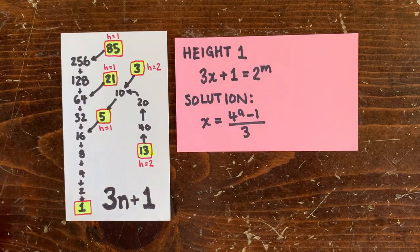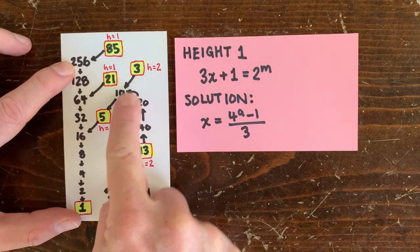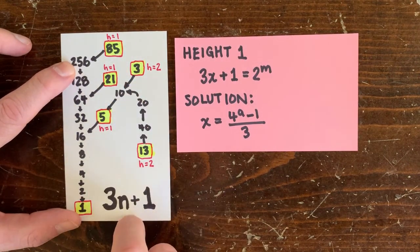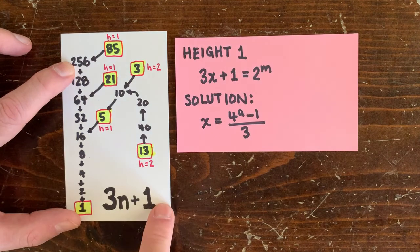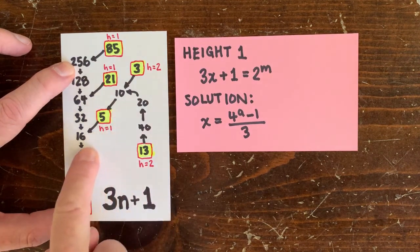Now, if an odd number connects to 5 through some even numbers that we don't care about, then it has height 2. For example, 3 and 13 both have height 2.